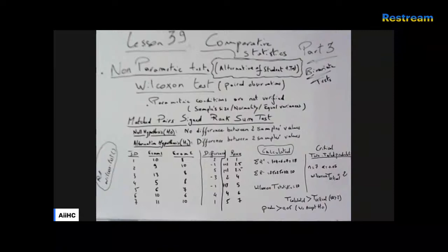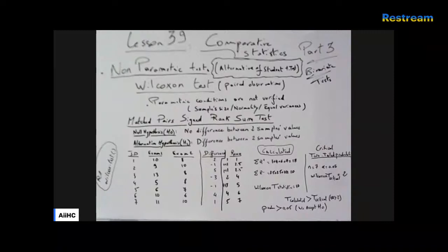We then calculate the sum of positive ranks and the sum of negative ranks separately. The sum of positive ranks: 1 + 4 + 6 + 7 = 18. The sum of negative ranks: 2.5 + 2.5 + 5 = 10. The Wilcoxon T statistic corresponds to the lower of the two sums, which in this case is the sum of the negative ranks: T = 10.